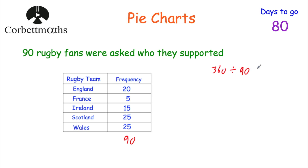There are 90 people altogether. A pie chart is a full circle, which is 360 degrees. So if we take 360 degrees and divide by 90, the number of rugby fans, we find out how many degrees each rugby fan represents. 360 divided by 90 is equal to 4. So each rugby fan is worth 4 degrees. If we multiply each frequency by 4, we can find the angle of each sector in our pie chart.